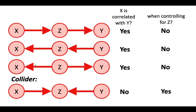However, the final case is different. If we were to control for z, then x and y would become correlated. This is an interesting difference between the first three structures and the final one. If we control for z, we create a sort of artificial correlation between x and y when there wasn't one there before.